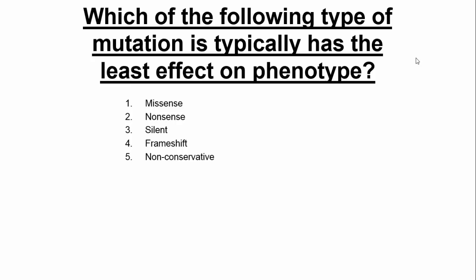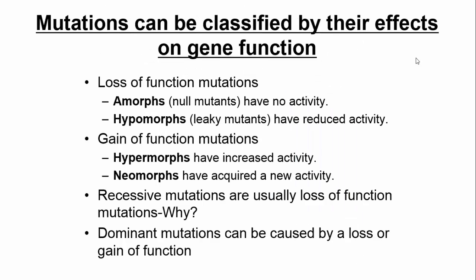Which of these have the least effect on phenotype? We just covered it. Mutations can also be classified by the effects they have on gene function. There are loss of function mutations — divided further into amorphs, where the mutant has no activity, or hypomorphs, leaky mutants, where they have reduced activity, so maybe the protein is produced but not functioning at its proper level or with reduced production. There's also gain-of-function mutations: hypermorphs that have increased activity — increased protein production or the protein is more active — or neomorphs, where the protein acquires a new activity.